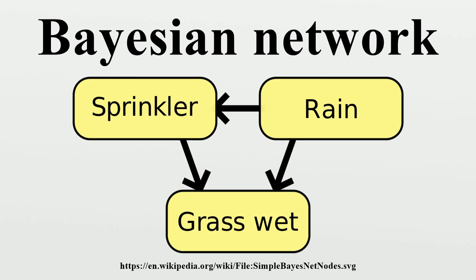There are three main inference tasks for Bayesian networks. First, inferring unobserved variables: because a Bayesian network is a complete model for the variables and their relationships, it can be used to answer probabilistic queries about them. For example, the network can be used to find out updated knowledge of the state of a subset of variables when other variables are observed. This process of computing the posterior distribution of variables given evidence is called probabilistic inference. The posterior gives a universal sufficient statistic for detection applications, when one wants to choose values for the variable subset which minimize some expected loss function. A Bayesian network can thus be considered a mechanism for automatically applying Bayes' theorem to complex problems.